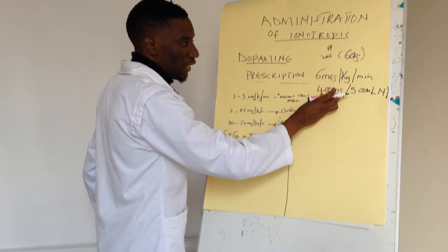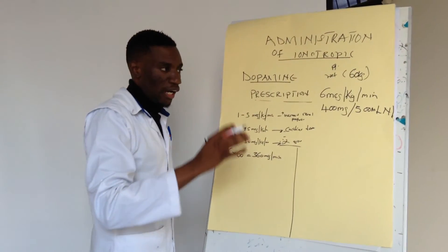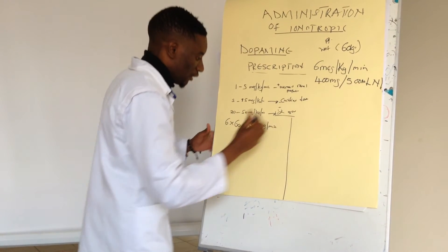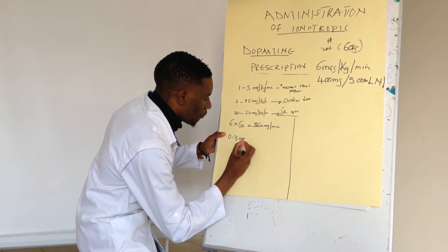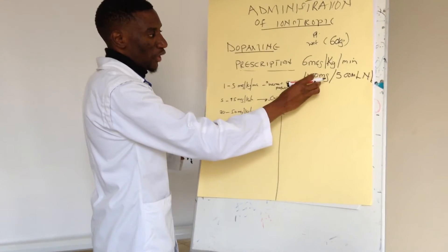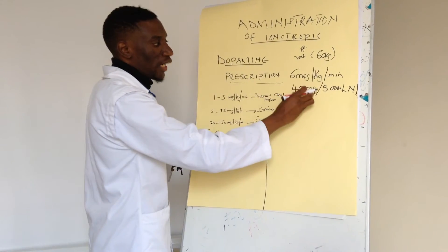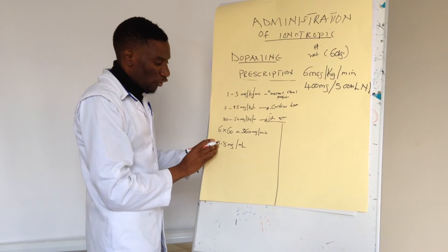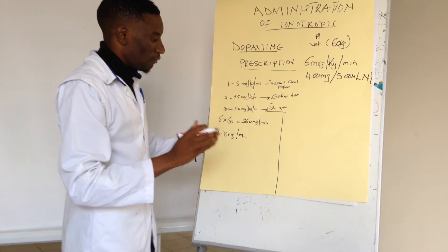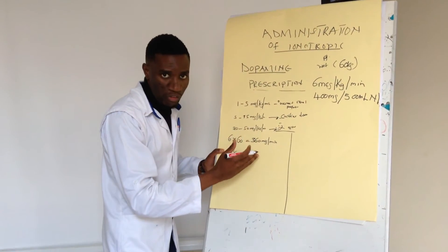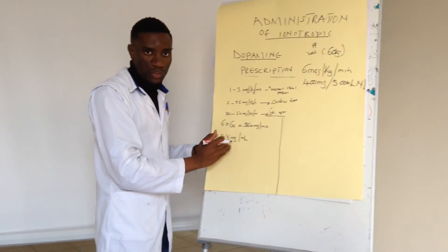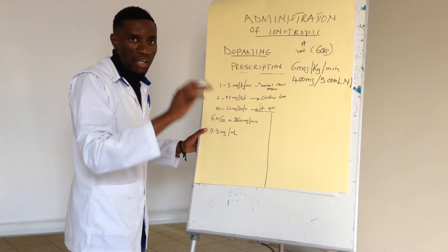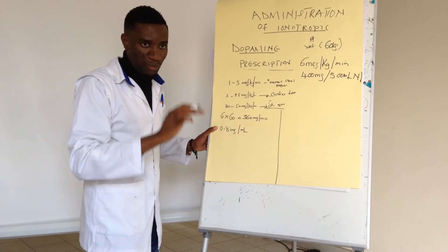The doctor says to dissolve 400 milligrams of dopamine into 500 mL of normal saline. I prefer to work in the smallest units possible. So I divide: 400 divided by 500 gives 0.8 milligrams per mL. To convert this concentration into micrograms, I multiply 0.8 by 1000 — since one milligram equals 1000 micrograms — giving 800 micrograms per mL.